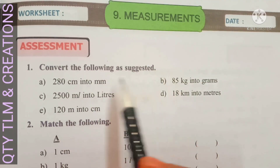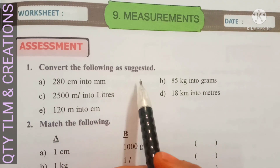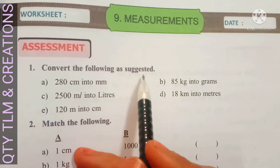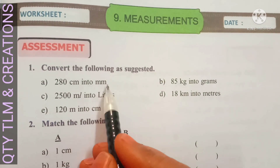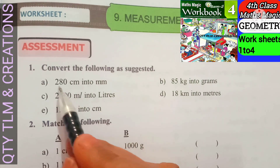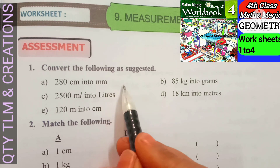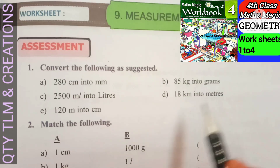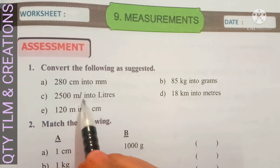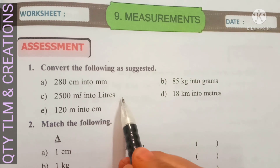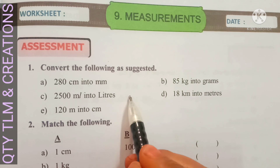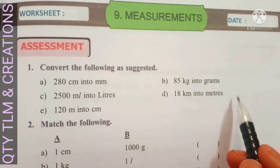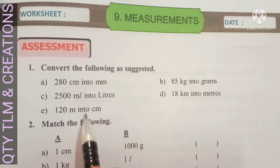This is the self-assessment section. I will tell you only the answers. Convert the following as suggested: (a) 280 centimeters into millimeters equals 2800 millimeters. (b) 85 kilograms into grams equals 85,000 grams. (c) 2500 milliliters into liters equals 2 liters and 500 milliliters. (d) 18 kilometers into meters equals 18,000 meters. (e) 120 meters into centimeters equals 12,000 centimeters.